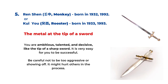The fifth personality is for the Ren Shen year and the Kui You year, for birth years 1932, 1933, 1992, and 1993. It's called the metal at the tip of the sword. You are very ambitious, talented, and decisive — just like the tip of a very sharp sword. It is very easy for you to be successful in life. But be careful not to become too aggressive or show off too much, as it might hurt other people in the process or damage your relationships.